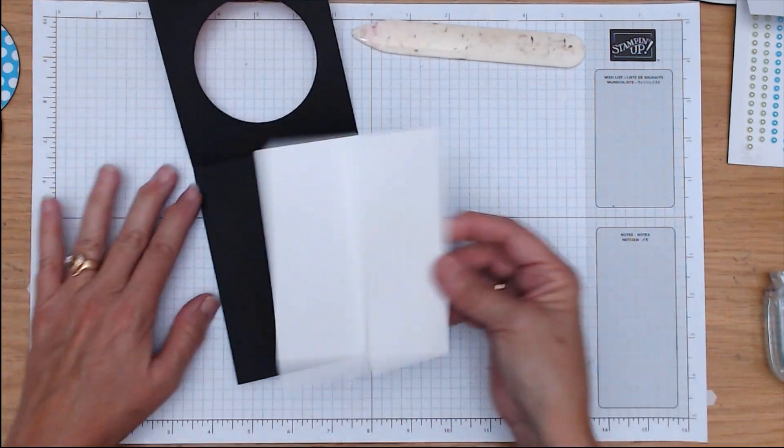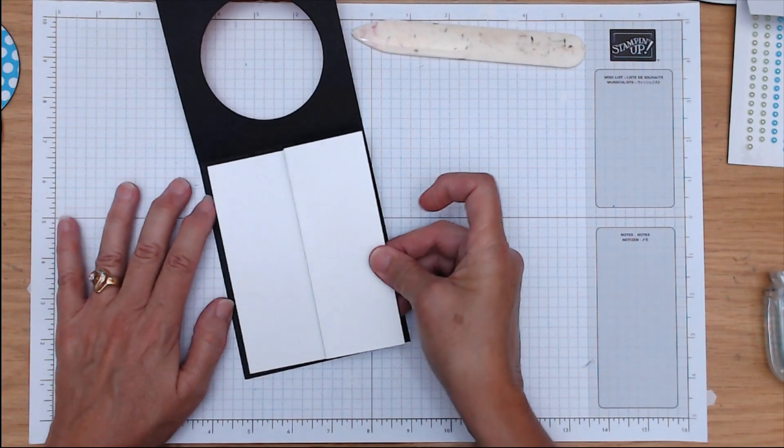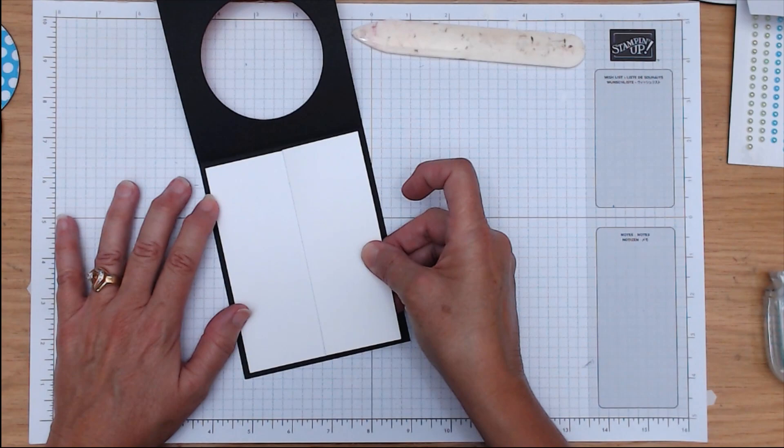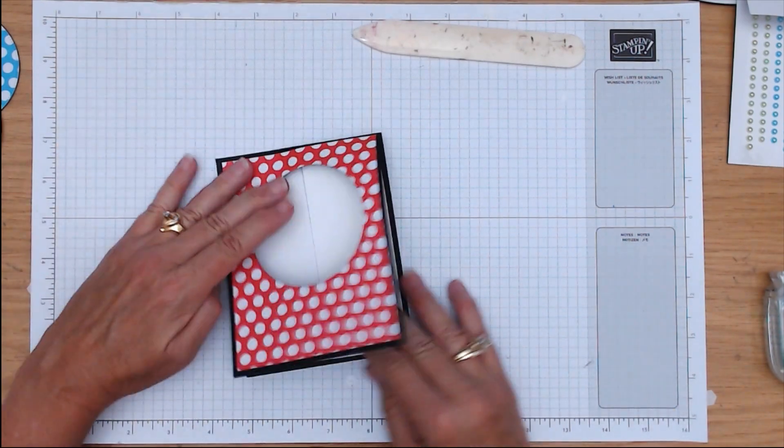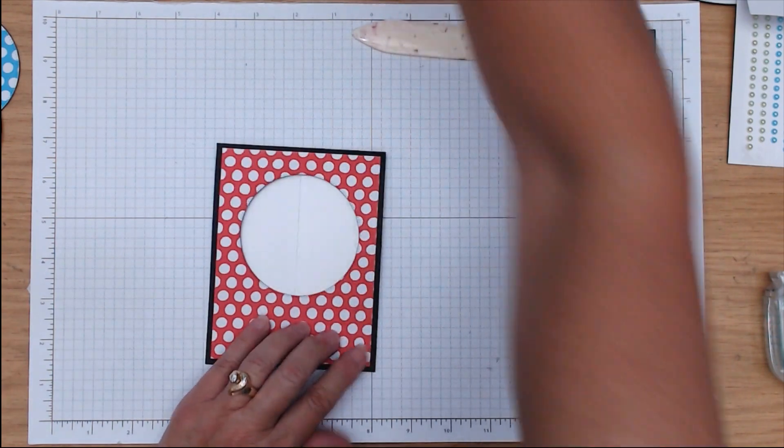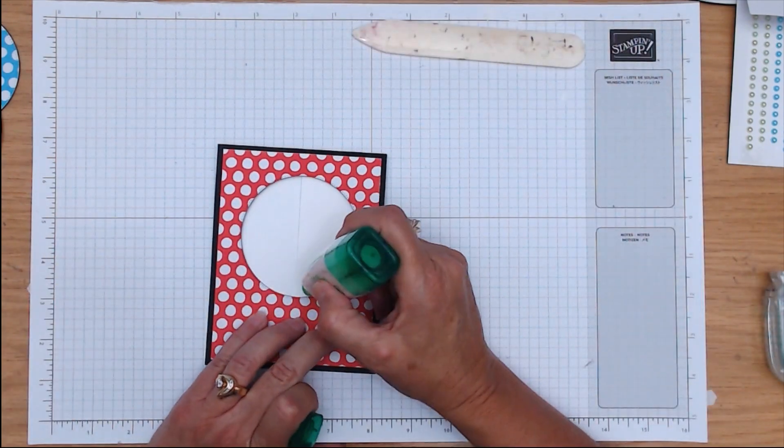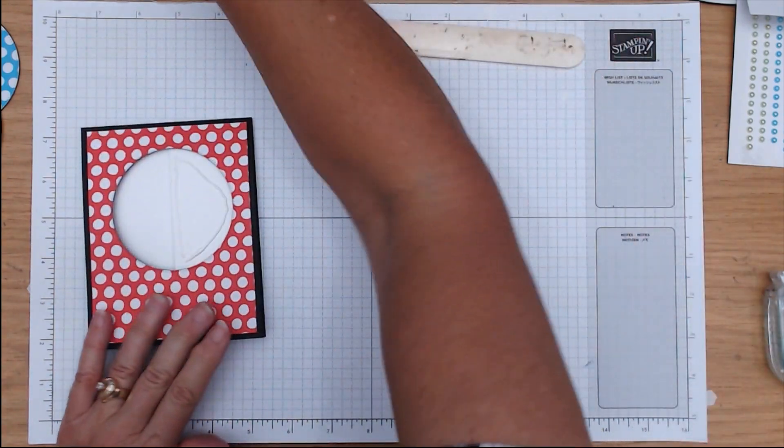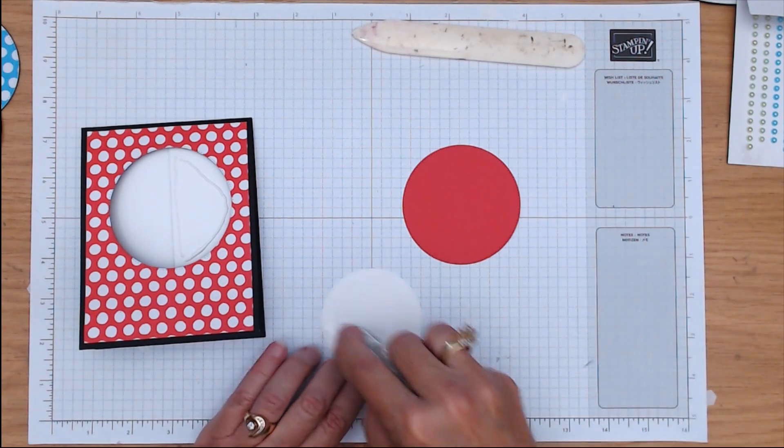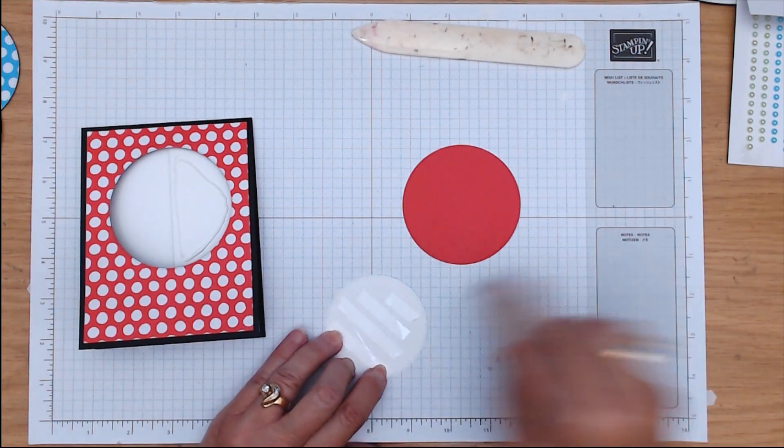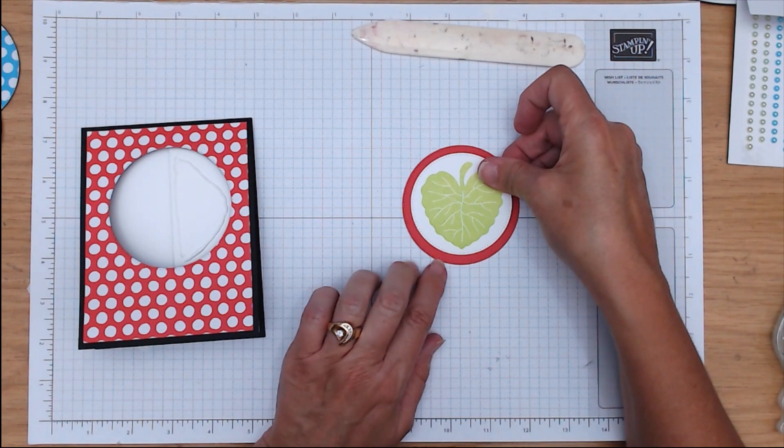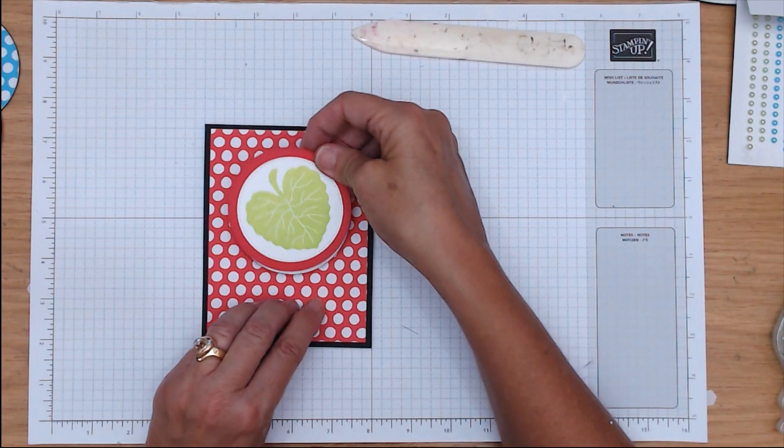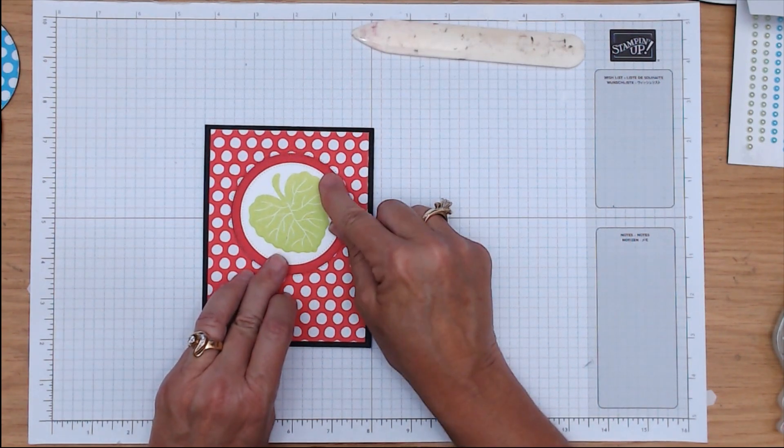You have your fold, you know, this part to your right. Center that in there, like so. Now, hold it close. You can use any adhesive, but I like to use the liquid glue for this part. I've got my Sweet Sorbet and my stamped leaf. So we're going to put those and then place that back in there.